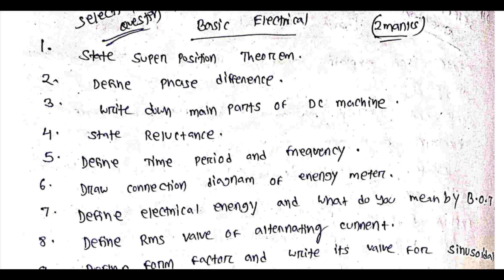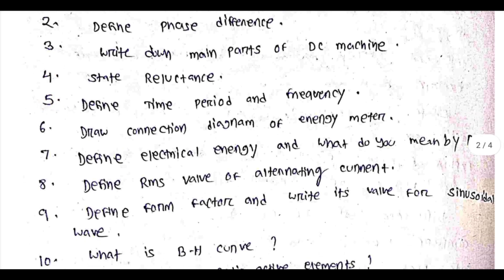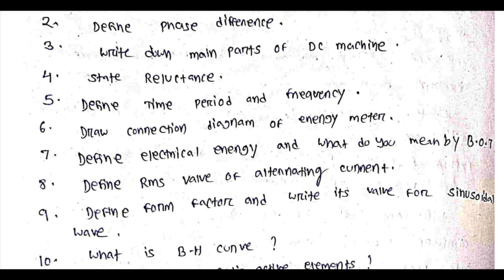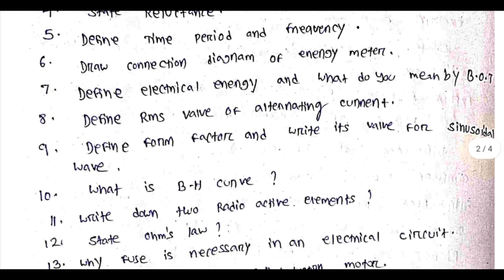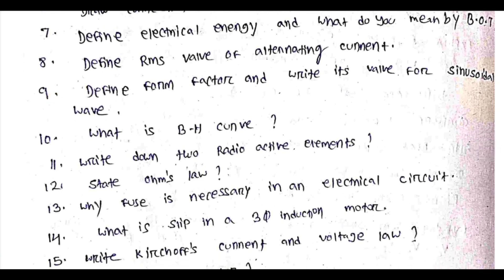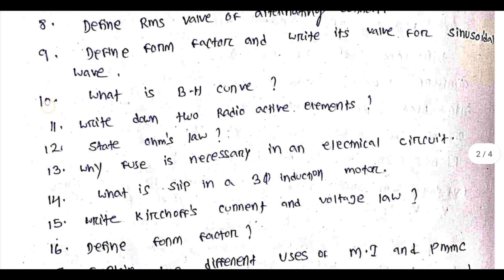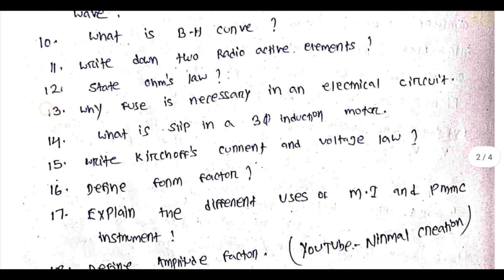Short-answer questions include: State the Superposition Theorem. Define phase difference. Write down the main parts of a DC machine. State reluctance. Define time period and frequency. Draw the connection diagram of an energy meter. Define electrical energy and what do you mean by BOT. Define RMS value of alternating current. Define form factor and write its value for a sinusoidal wave. What is a BH curve?